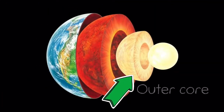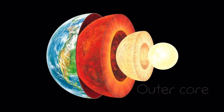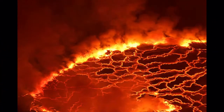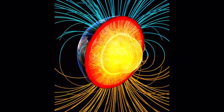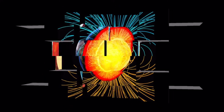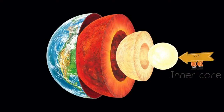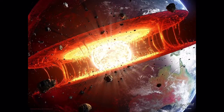The outer core is the third layer of the earth. It is the only liquid layer and it is made up of very hot metals — iron and nickel. This is what gives the earth a magnetic field. The inner core is the center of the earth. It is the hottest part of the earth, almost as hot as the sun.